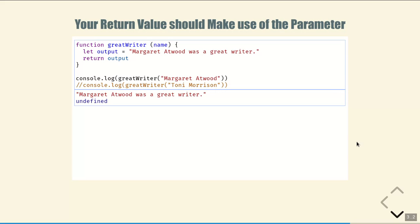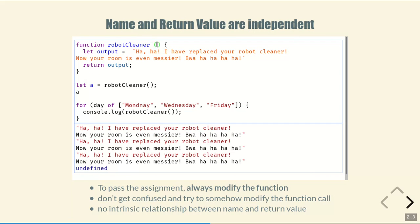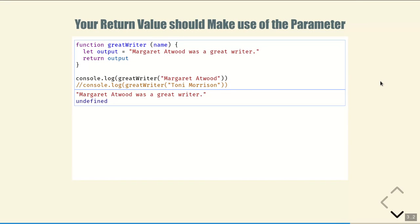When you write a function, if it's not a completely primitive function like robot cleaner, it will have a parameter. In general a function takes a parameter and transforms it to produce the output. For instance, I have a function here called great writer, which takes one parameter — name. We set the output equal to 'Margaret Atwood was a great writer' and return it. If we run great writer with the string 'Margaret Atwood' as the parameter, it produces the sentence 'Margaret Atwood was a great writer' just as expected.